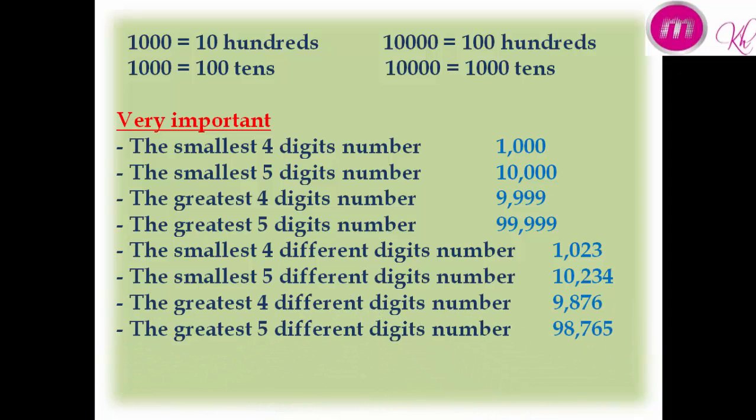The greatest four different digit number is 9,876. The greatest five different digit number is 98,765.